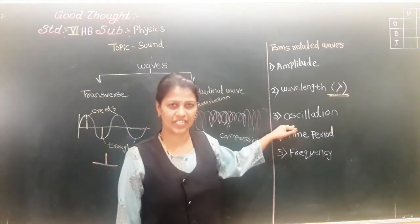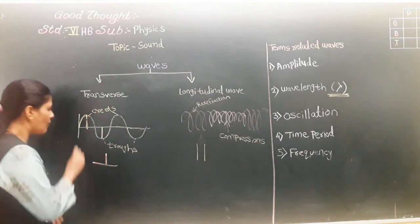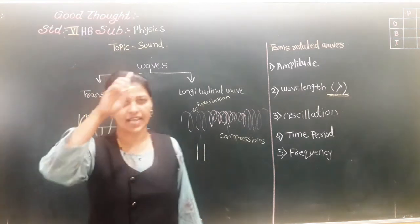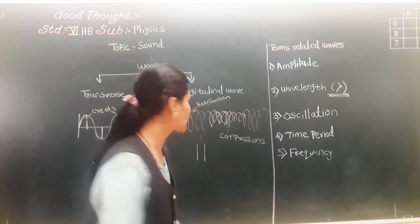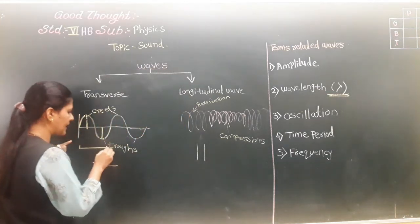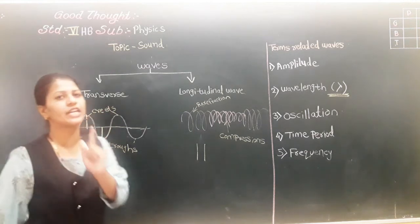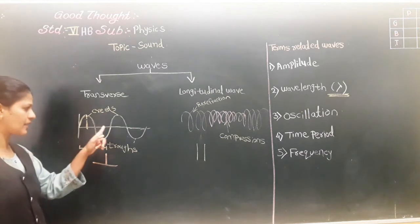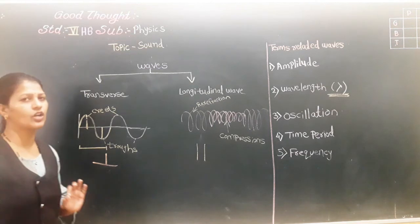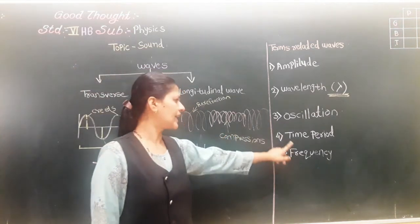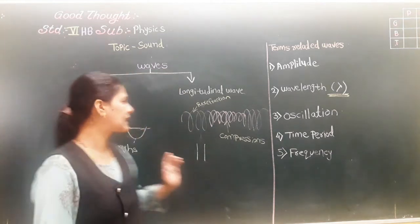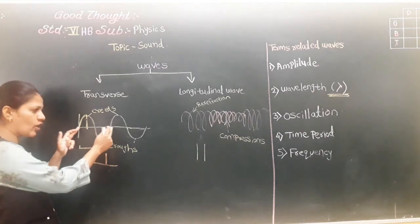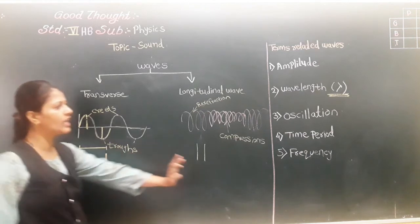The next term is oscillation. When a wave has completed one full wave — one crest and one trough — that is called one oscillation. Time period is the time taken to complete one oscillation.